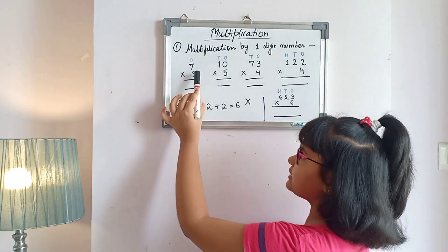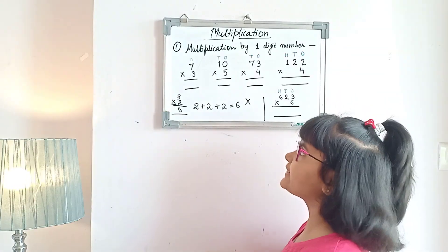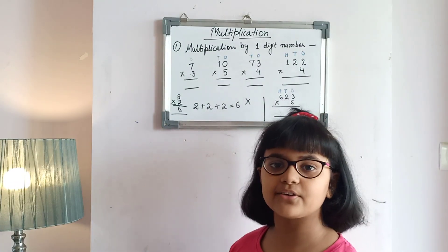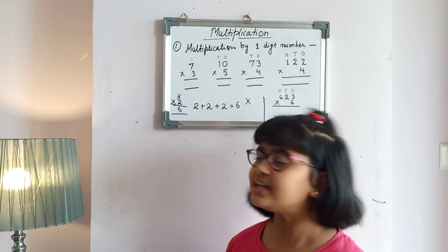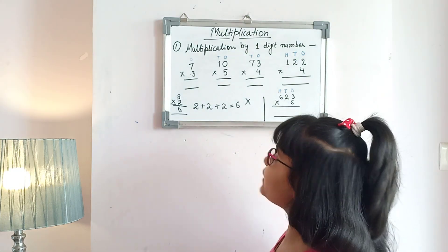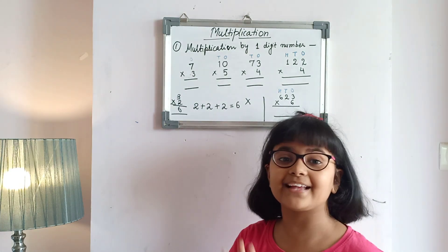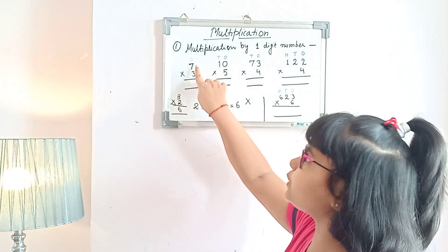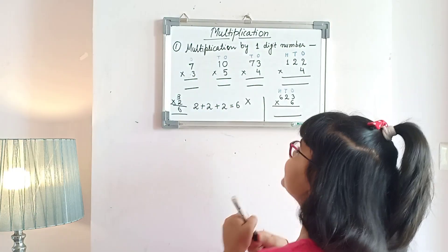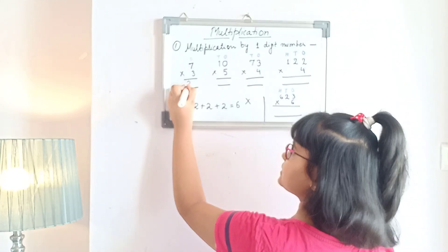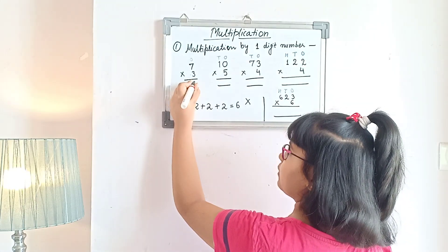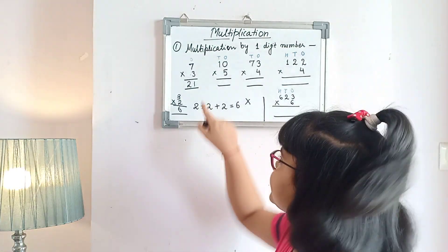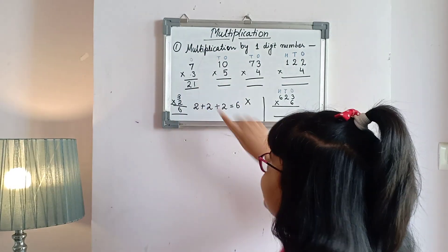Now let's recite the 3 times table. 3×1 is 3, 3×2 is 6, 3×3 is 9, 3×4 is 12, 3×5 is 15, 3×6 is 18, and 3×7 is 21. So the answer is 21.